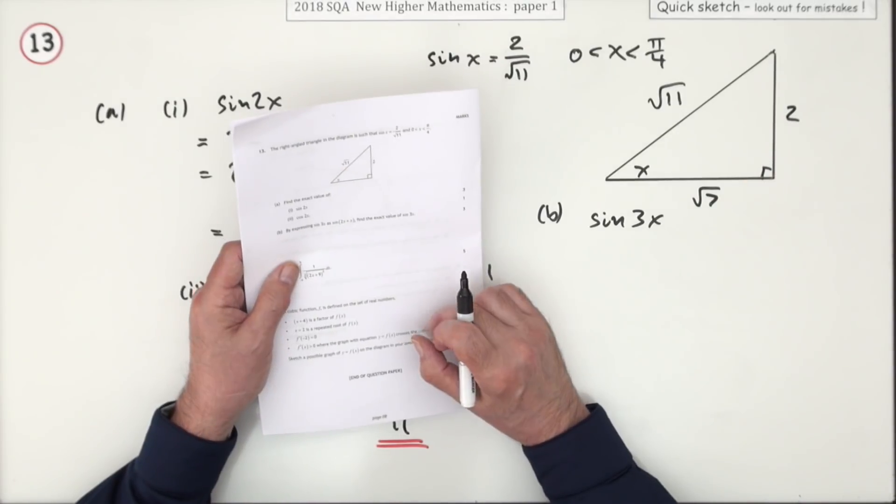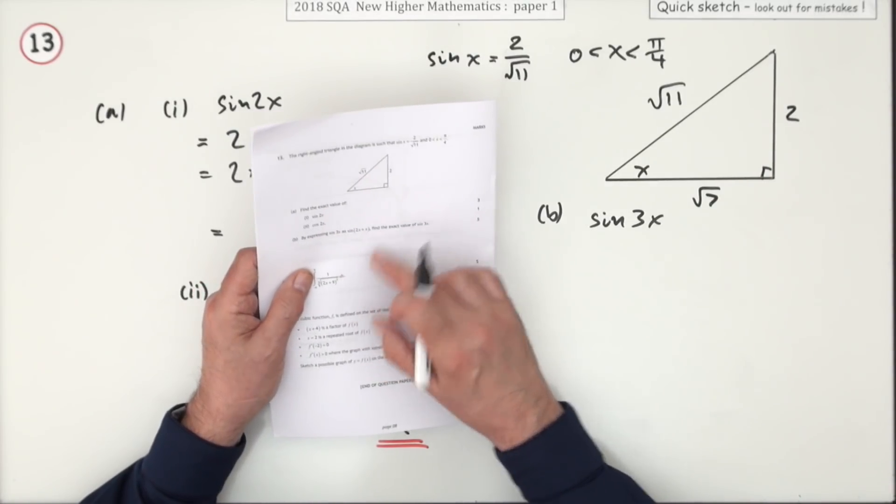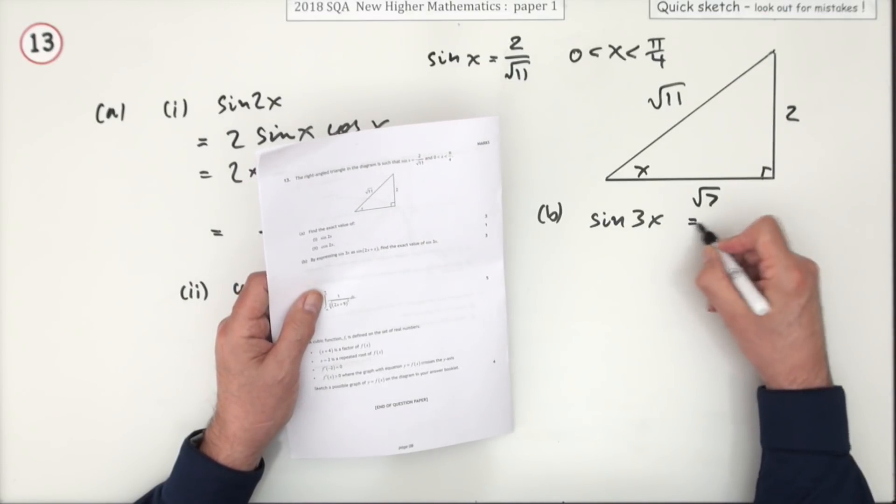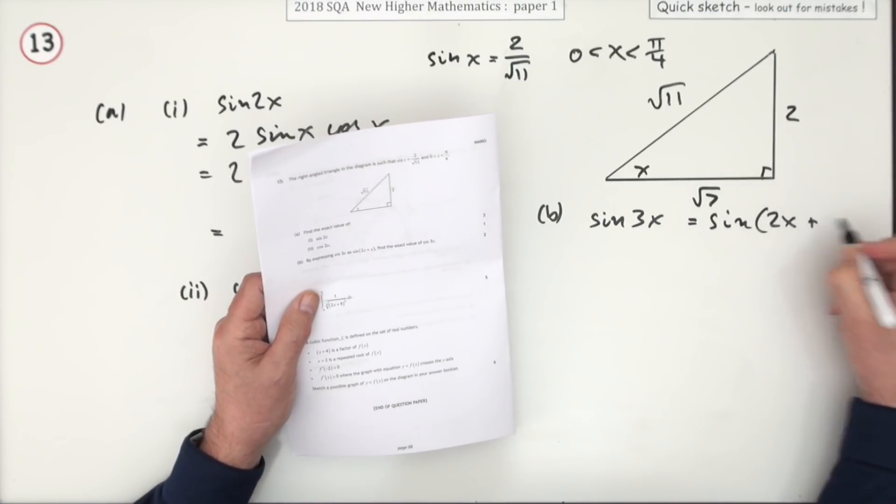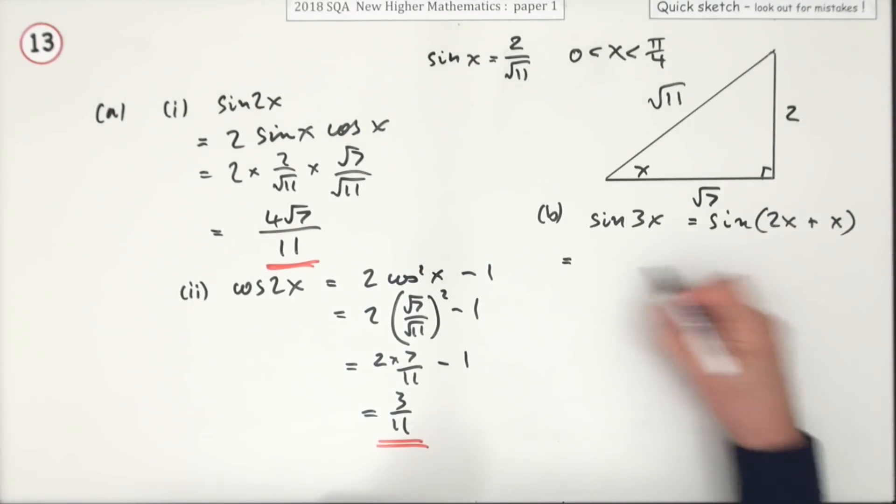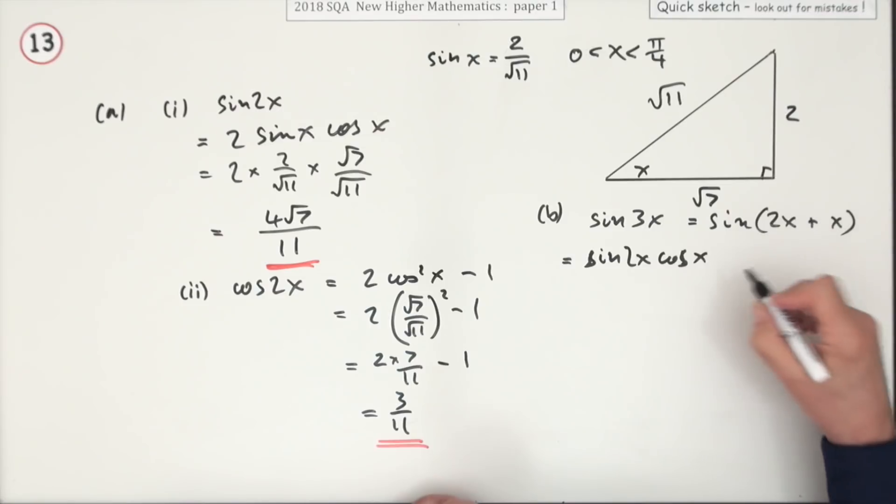In part B, by expressing sine 3x—again, I didn't need to tell you that—you have to find the exact value of sine 3x. Well, you would just break it into sine of 2x plus x and then expand that.